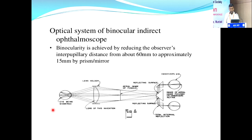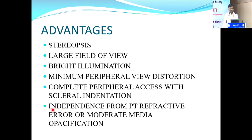Binocular clarity is achieved by prisms and mirrors. The observer's interpupillary distance of approximately 60 mm is reduced to 15 mm by the prisms and mirrors. The advantages of indirect ophthalmoscope include stereopsis, a larger field of view compared to 90D or 78D biomicroscopy, bright illumination, minimal peripheral view distortion if done properly, complete eye examination with scleral indentation, and independence from patient refractive error or moderate media opacification.